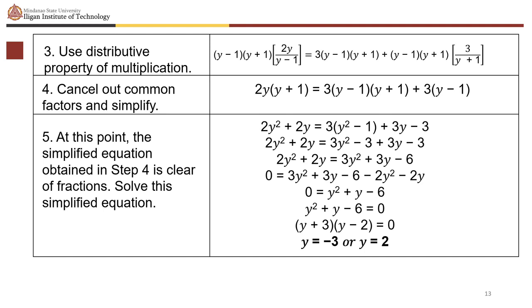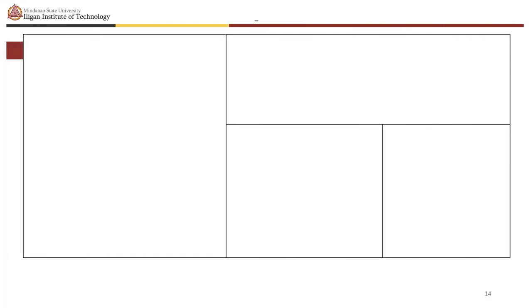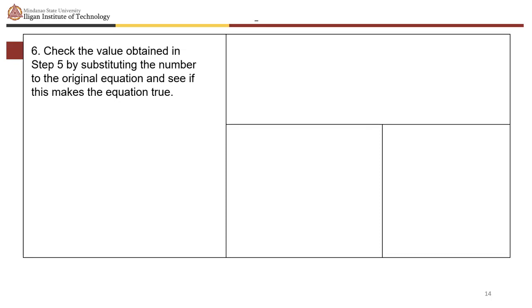Subtracting 2y squared plus 2y from both sides: 0 equals y squared plus y minus 6. Factoring: (y plus 3)(y minus 2) equals 0, so y equals negative 3 or y equals 2. Verify both values satisfy the original equation.